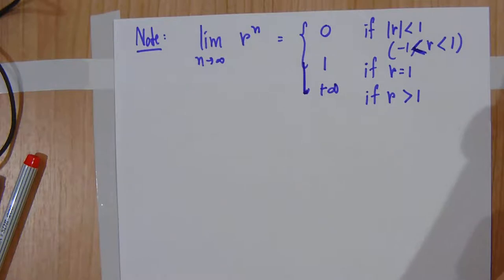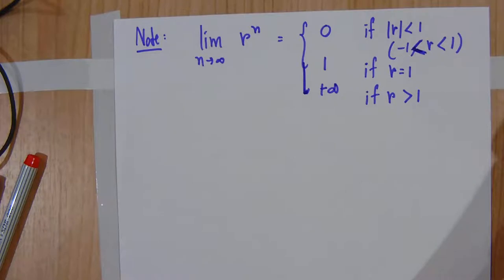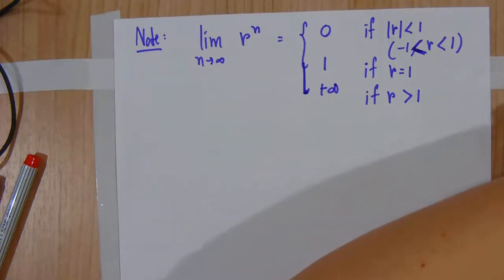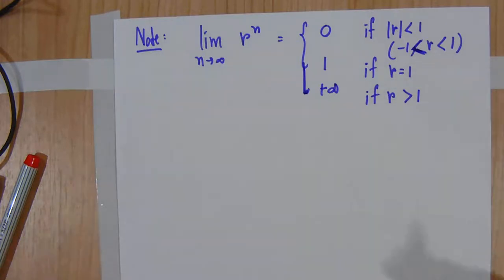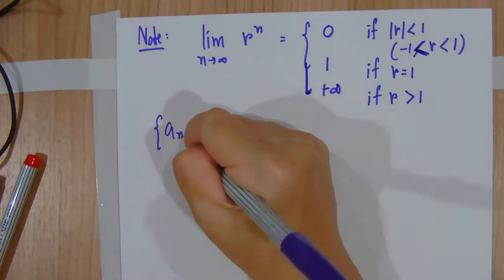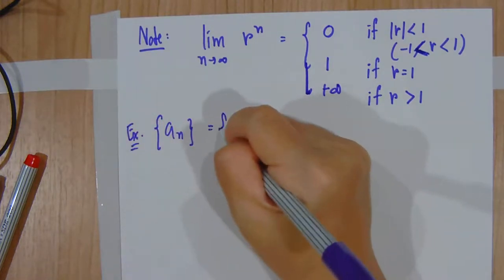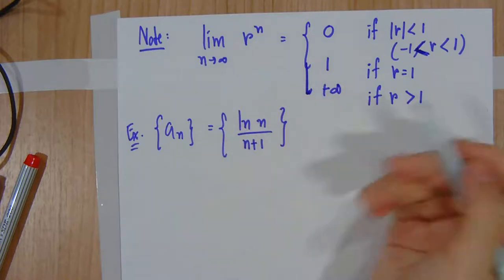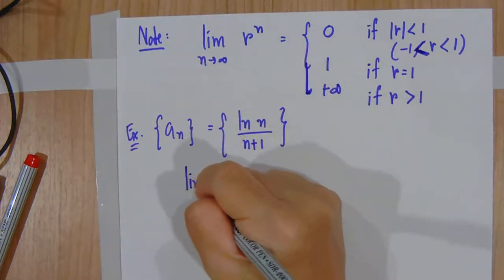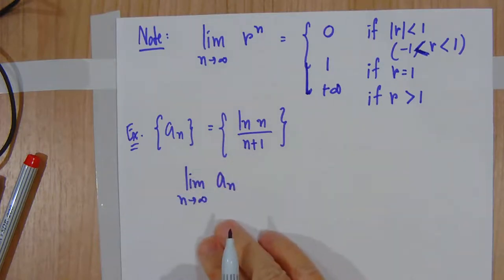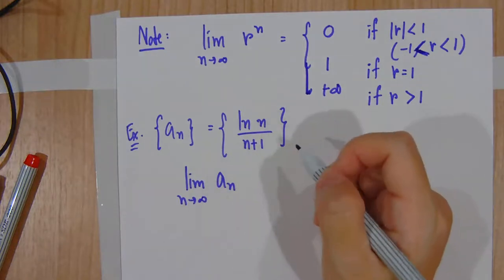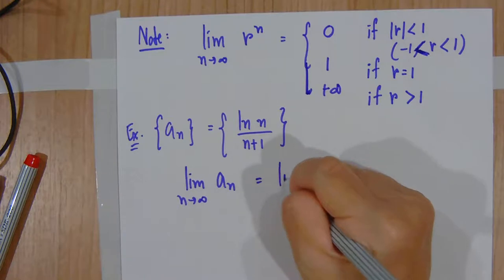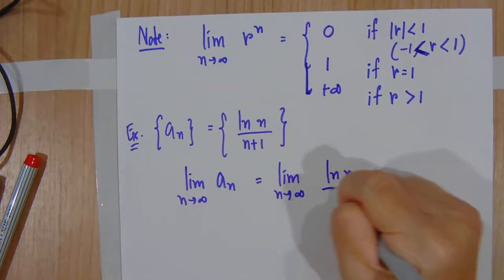Be careful when finding these values. Let's see an example. We have to check the sequence a_n equals e^n over n plus 1. To check whether the sequence converges, we just find the limit of the term a_n as n approaches positive infinity. This is the limit of e^n over n plus 1.